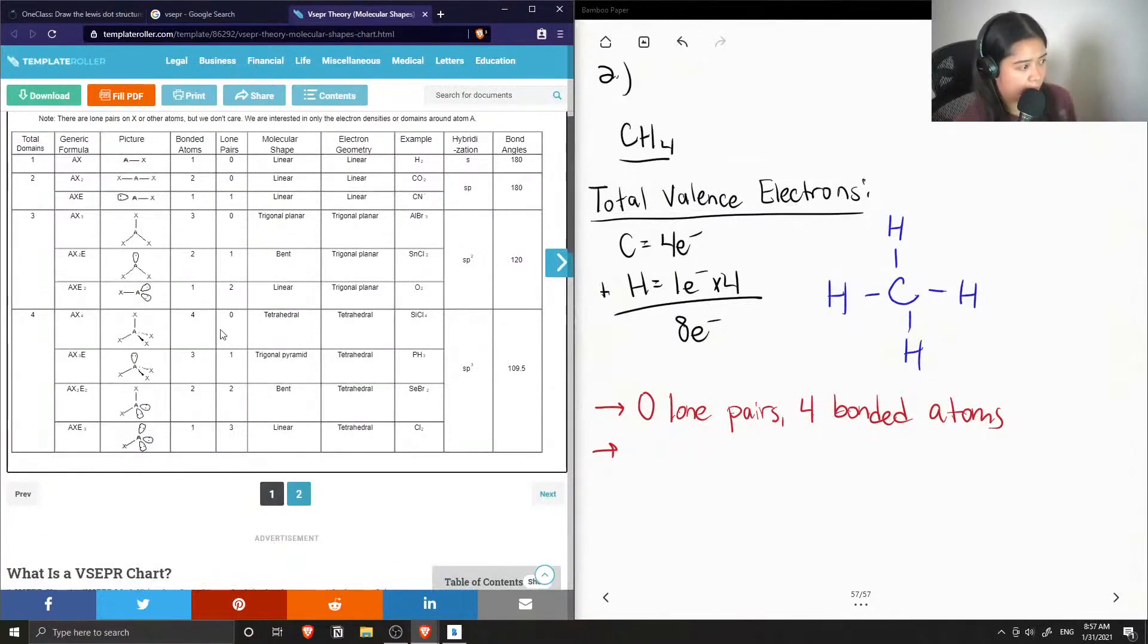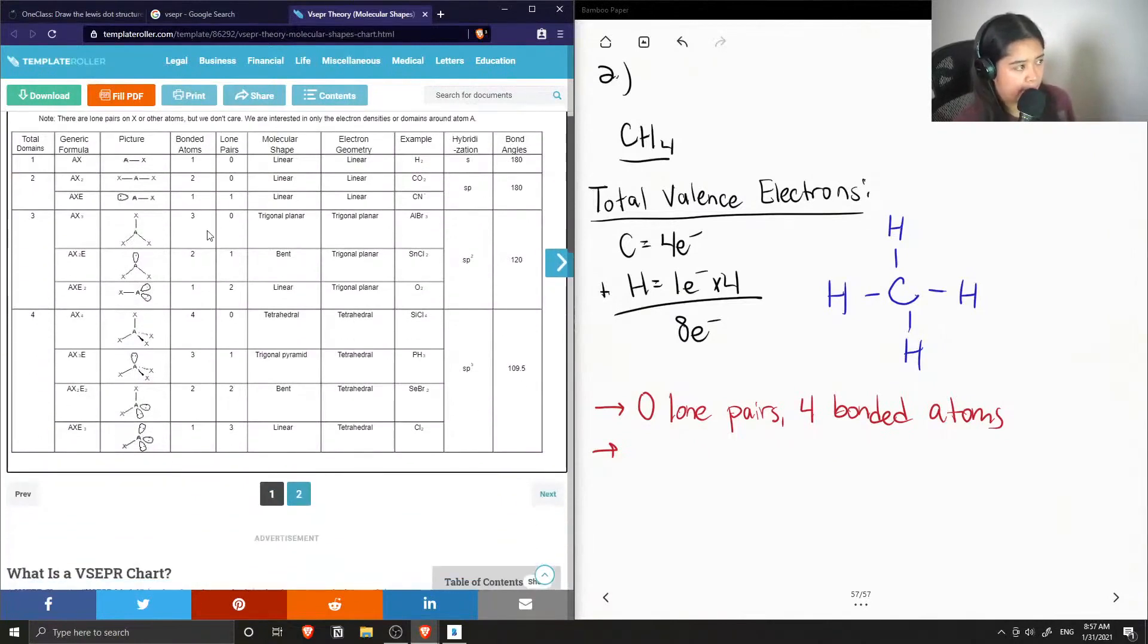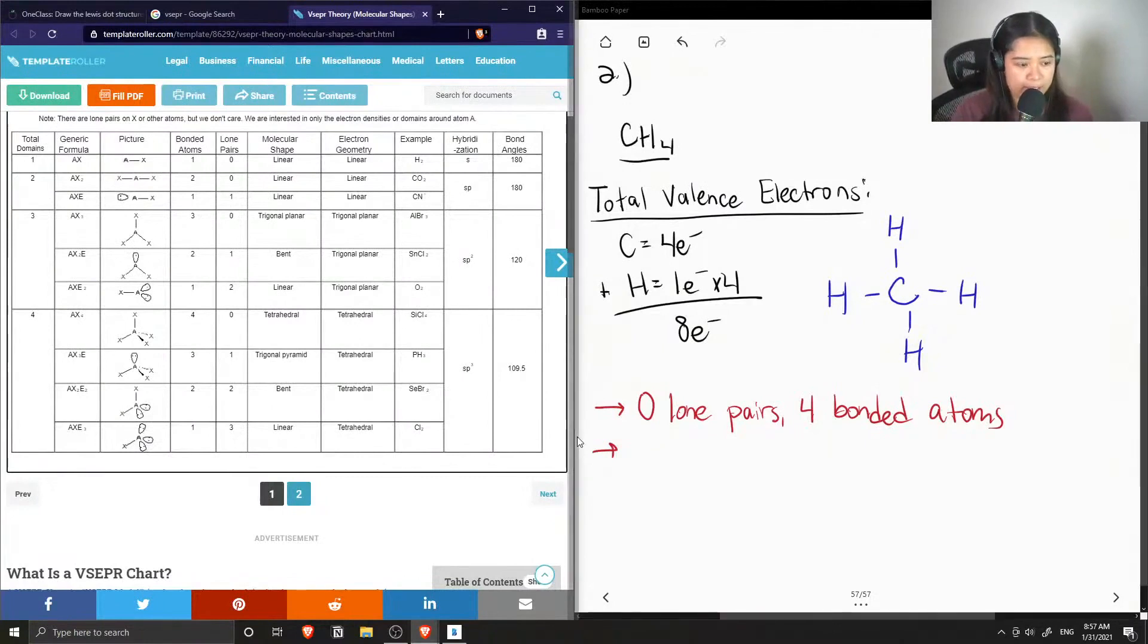Using this VSEPR theory table, when the central atom has four bonded atoms and zero lone pairs, its molecular shape and electron geometry is tetrahedral.